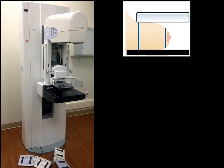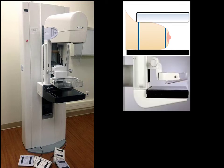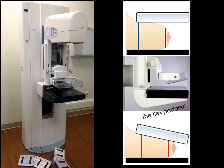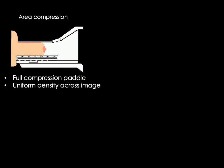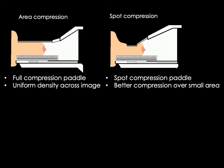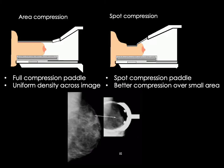These days, most mammography systems use some sort of flex paddle design. Instead of having the paddle stay parallel to the image detector, it can bend slightly to allow adequate compression of the nipple side of the breast. Another technique is spot compression, used to improve image quality over a small area of the breast — typically to zero in on something that may not be clear in the standard view acquired using the full compression paddle.